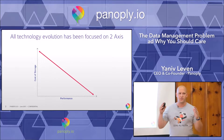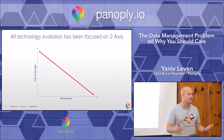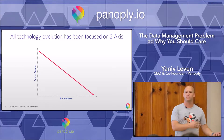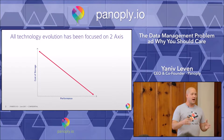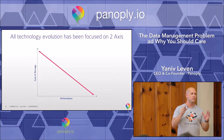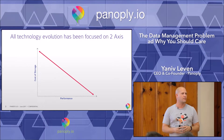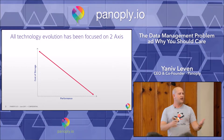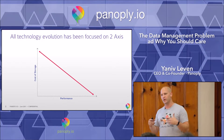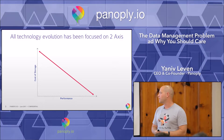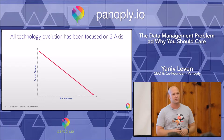Now in these four decades there have been major technology breakthroughs. We've had amazing companies like Amazon, Google, Oracle, SAP, and IBM basically focusing on two main axes: one, the axis of storage; two, the axis of performance. So today compared to the 1970s, we're able to store data at a much cheaper rate and analyze much bigger sets of data with much faster results.